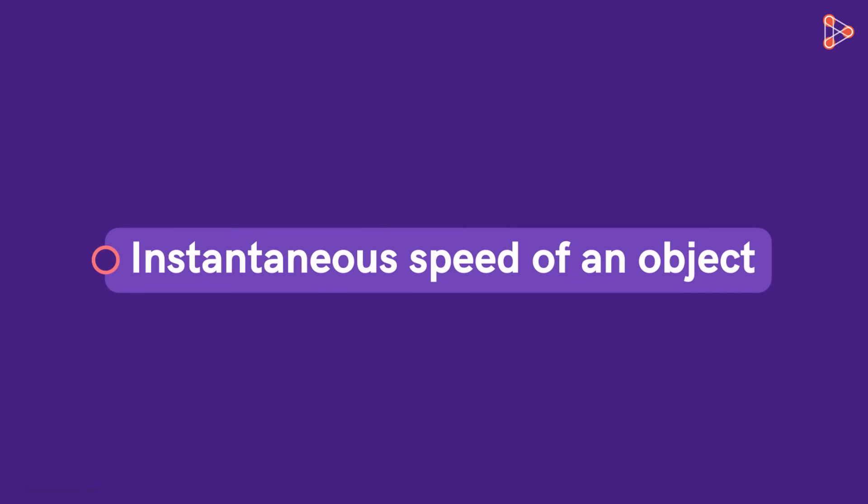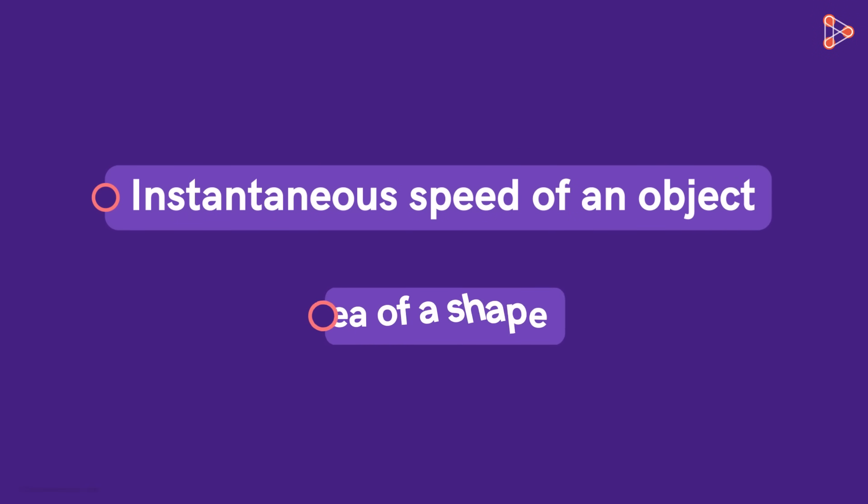In the next part, we will see how to find the instantaneous speed of an object and the idea applied to calculate the area of a shape. We will also discover that these two ideas are related to each other. See you in the next part!